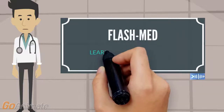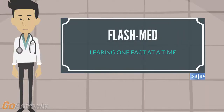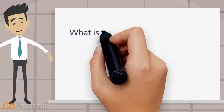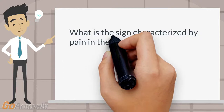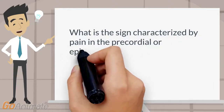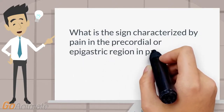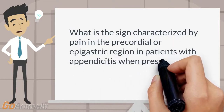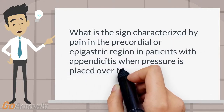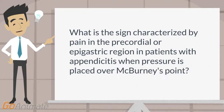FlashMed. What is the sign characterized by pain in the precordial or epigastric region in patients with appendicitis when pressure is placed over McBurney's point?